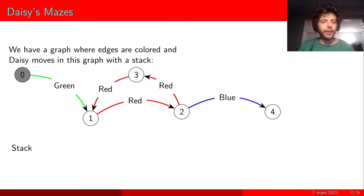In this problem we have a graph with edges and colors on edges. Daisy can move in this graph using the edges with a condition on the stack. So here she moved from 0 to 1 using a green edge, so she added a green card on top of her stack.